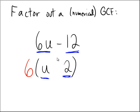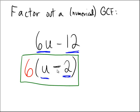And the connector symbol between the two is still the minus sign. So the answer to this problem would be 6 multiplied by the quantity u minus 2. You can check by the distributive property to ensure that you get the same answer as you had to begin with.